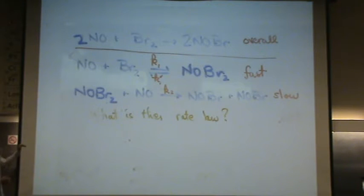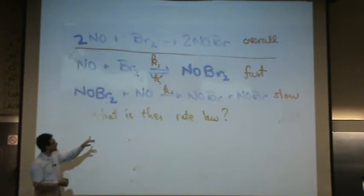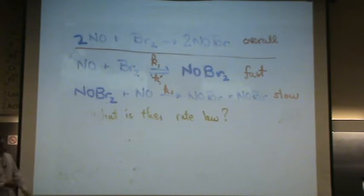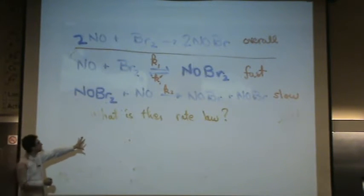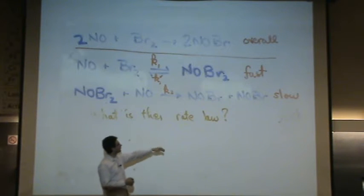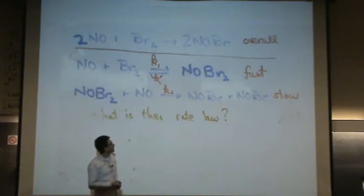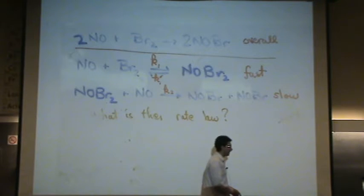The first reaction, the fast one, NO plus Br2 goes reversible to NOBr2. The second one, NOBr2 plus NO, only a forward reaction, goes to NOBr plus NOBr. What's the rate law?